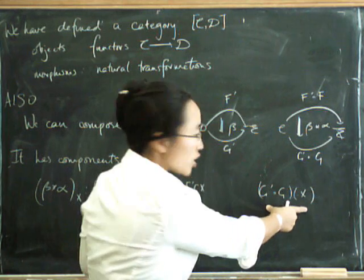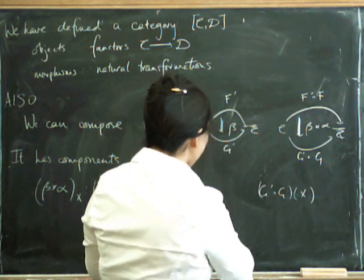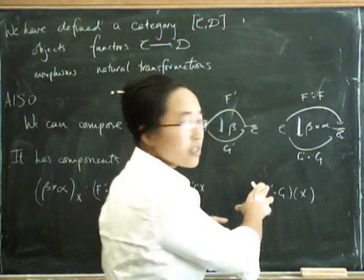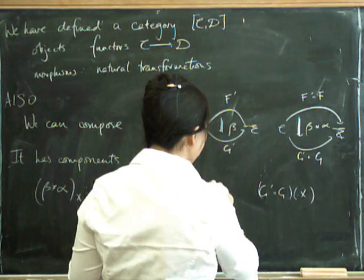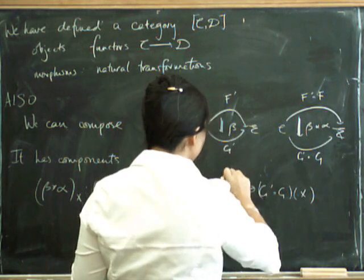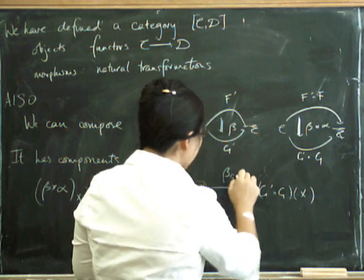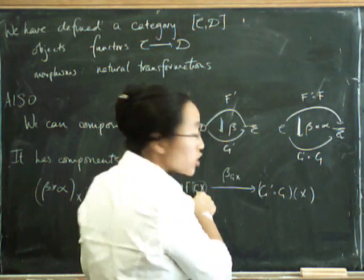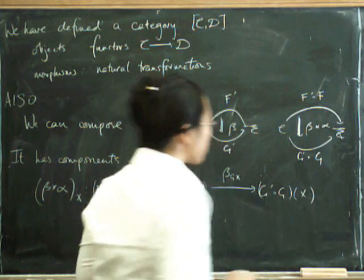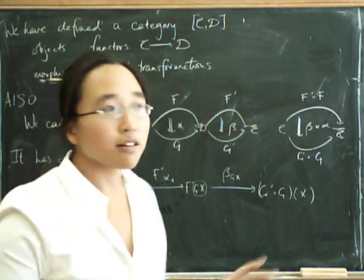Now, this is G prime of G of X. And we've got beta from F prime of anything to G prime of the same thing. So if we do beta at the object G of X, that sends us from F prime of G of X to G prime of G of X. Ah! We got that.